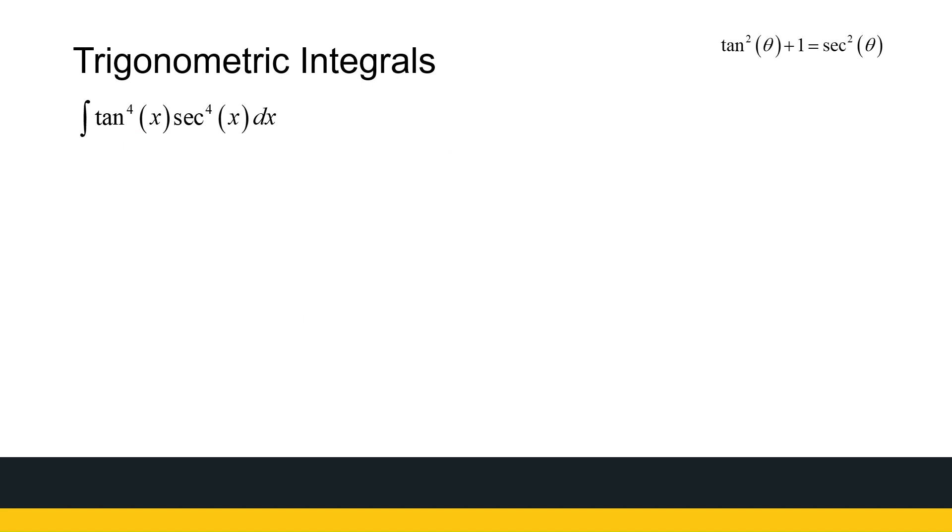What we need to remember is the identity tan²(θ) plus 1 gives me sec²(θ), and we're going to treat these the same as what we did in the first video when we looked at sine to a power times cos to a power. We need to take it apart a bit. What you need to remember as well: the derivative of tan is sec², the derivative of sec is sec tan.